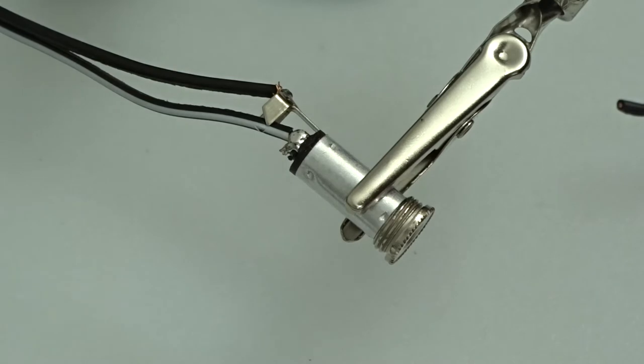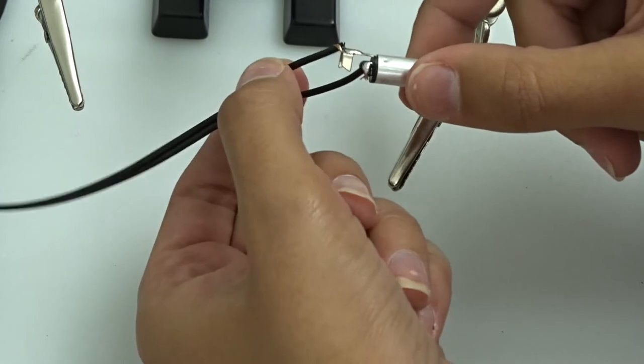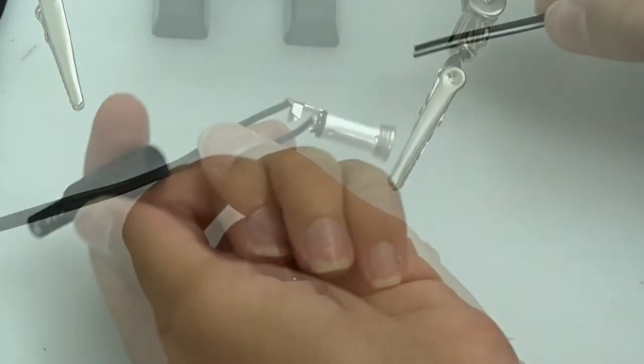Repeat the soldering process with the other post and wire. Make sure the wire and solder from one post stays completely separate from the wire and solder on the other post.